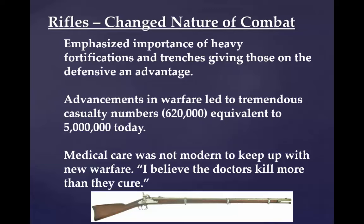These advancements led to tremendous casualty numbers — battles where you're losing 20,000 casualties or more in some cases. That is why you have really upwards of 700,000 deaths in the Civil War, with estimates ranging from 600,000 to 700,000 or maybe even more. That's roughly equivalent to about 5 million people today as a percentage of the United States population.